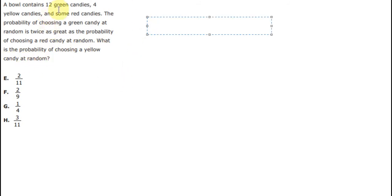So in here, we know that the question mentions the green, yellow, and red candy. But you can see that you don't have the number of the red candy. However, we have the second sentence in here. They mention that the probability of the green candy is twice the probability of the red candy. So in the second sentence, they want to mention about the equation.